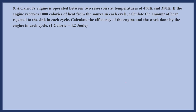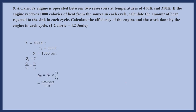A Carnot's engine is operated between two reservoirs at temperatures of 450 Kelvin and 350 Kelvin. If the engine receives 1000 calories of heat from the source in each cycle, calculate the heat rejected to the sink, the efficiency, and the work done per cycle. T1 is 450 Kelvin, T2 is 350 Kelvin, Q1 is 1000 calories. Using Q2 by Q1 equals T2 by T1, we get Q2 equals Q1 into T2 by T1, which gives 777.77 calories.